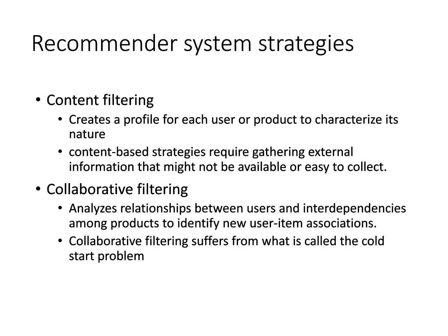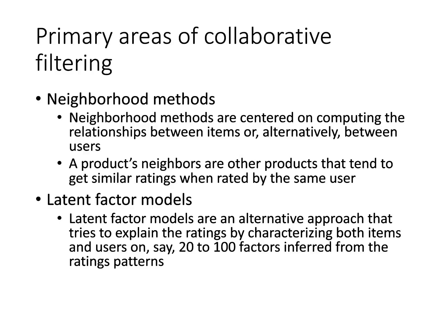There are two popular recommender system strategies: content filtering and collaborative filtering. In content filtering, we focus on the characteristics and nature of the product. In collaborative filtering, user-item associations are derived from relationships and interdependencies. In this paper, they converge on collaborative filtering.